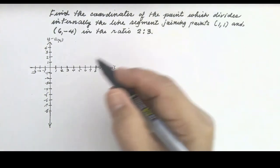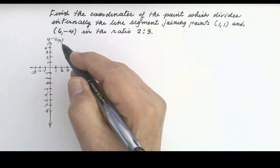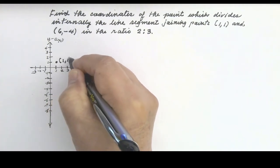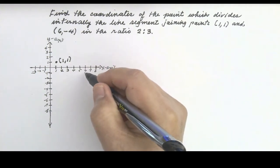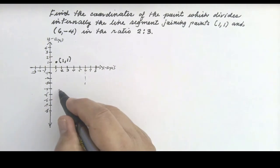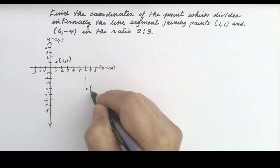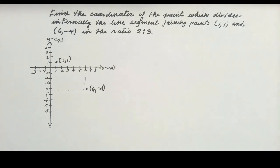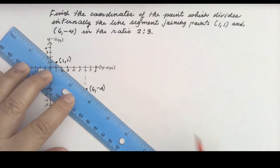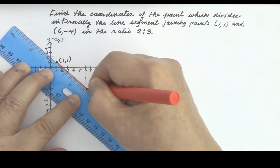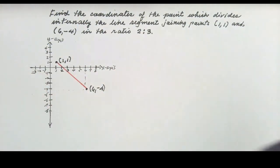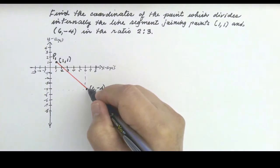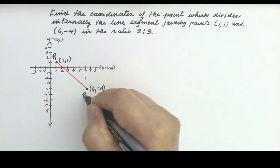Let us plot point (1, 1) and point (6, -4) on the coordinate plane. Let us connect the two points. Let us represent the first point (1, 1) by P₁ and the second point (6, -4) by P₂.